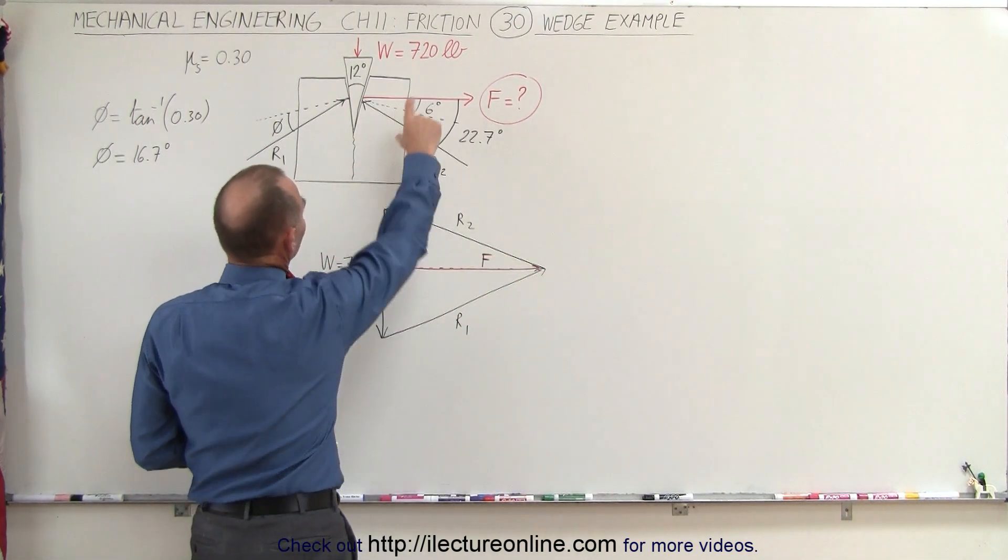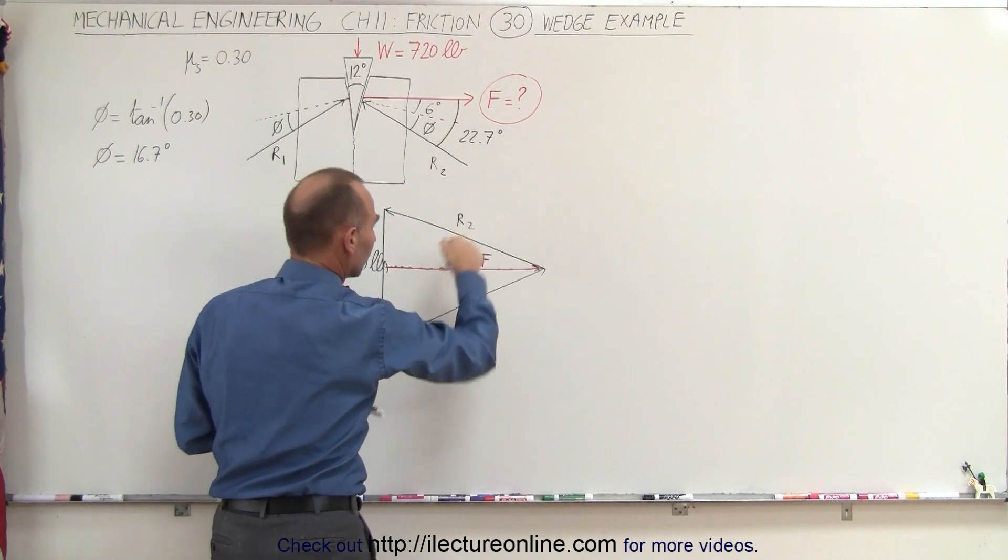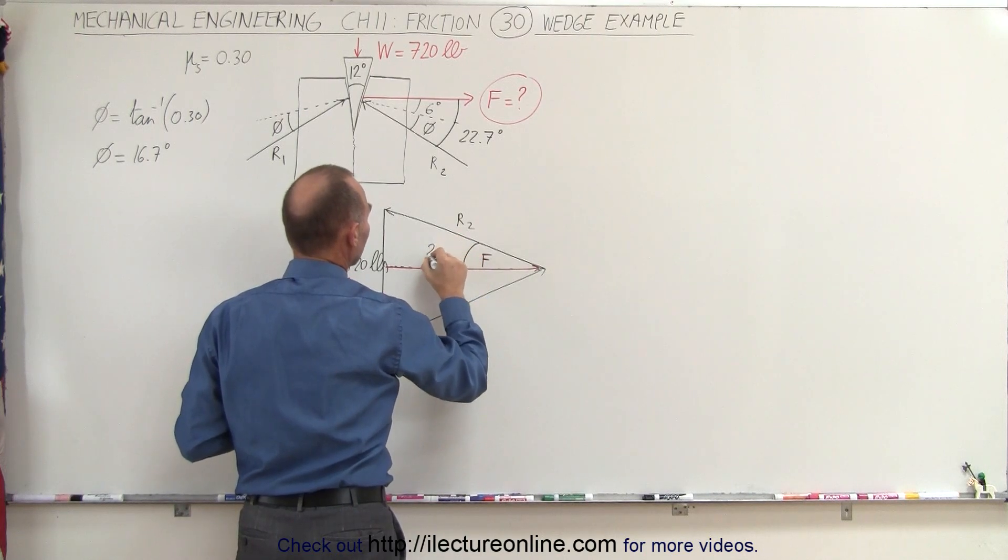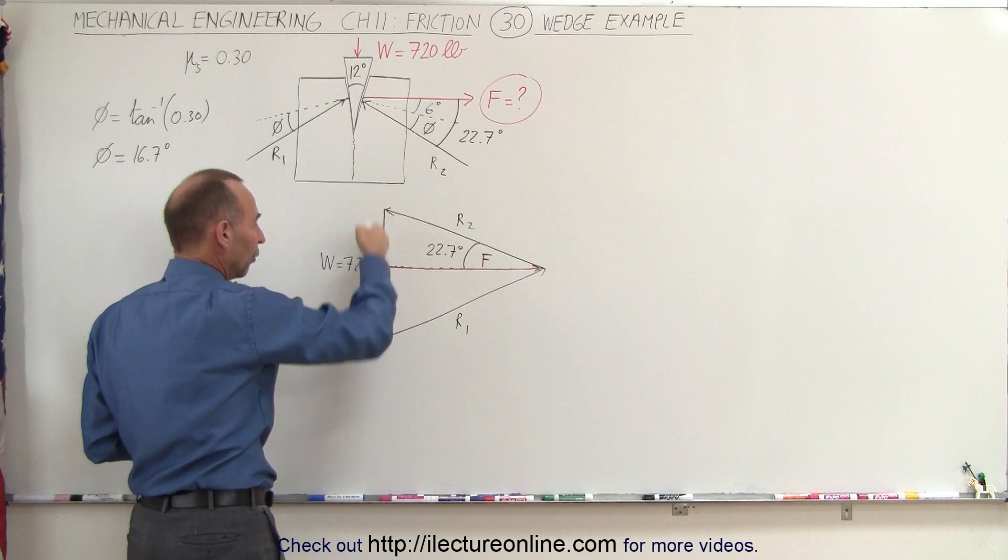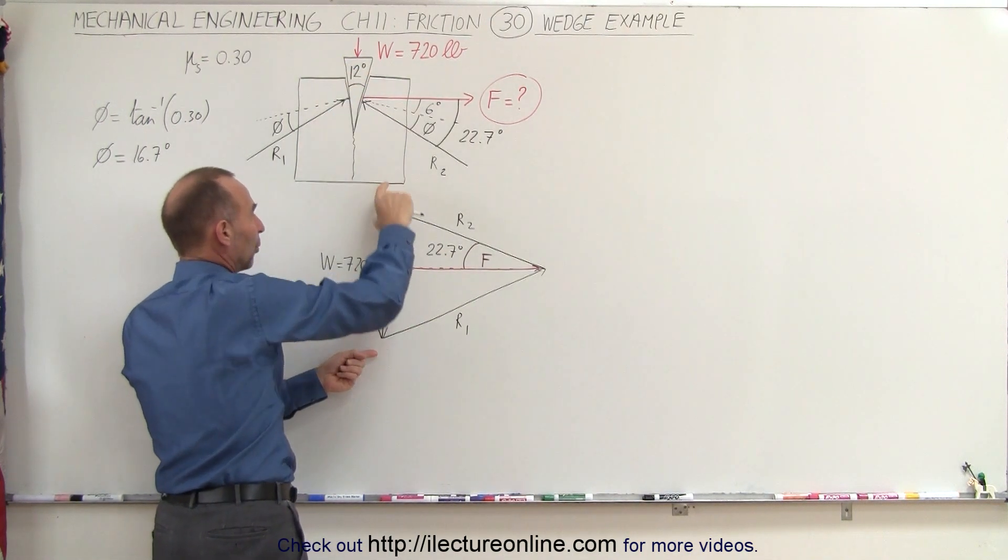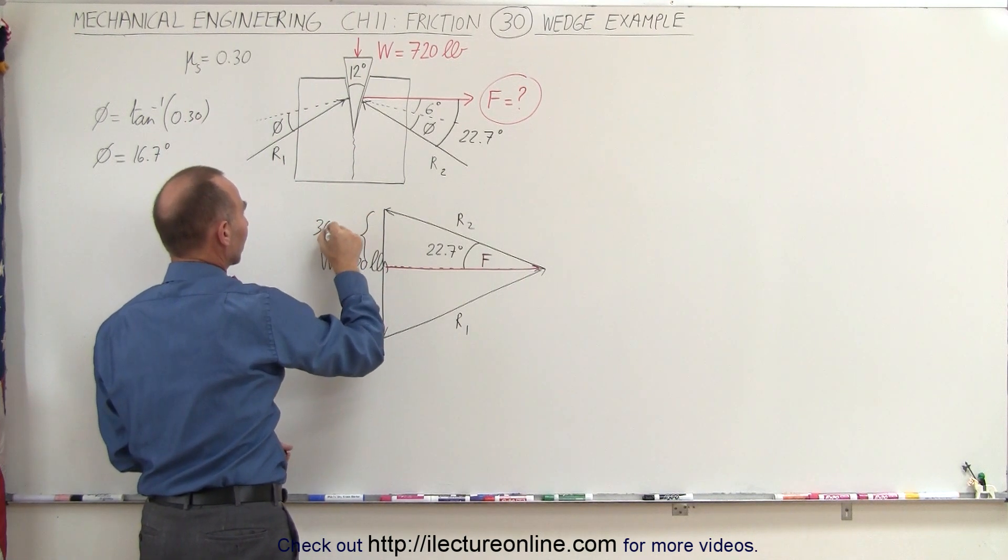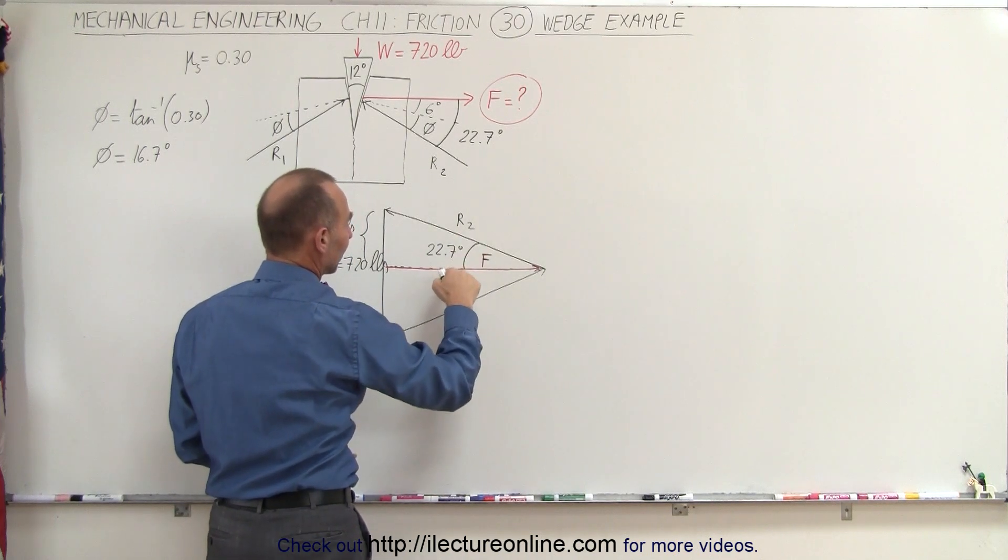What we need to do is find this angle, which is the angle of the horizontal relative to the reaction force. We know this angle is 22.7 degrees. If we take half of the full force applied to the wedge, we have a force of 360 pounds.